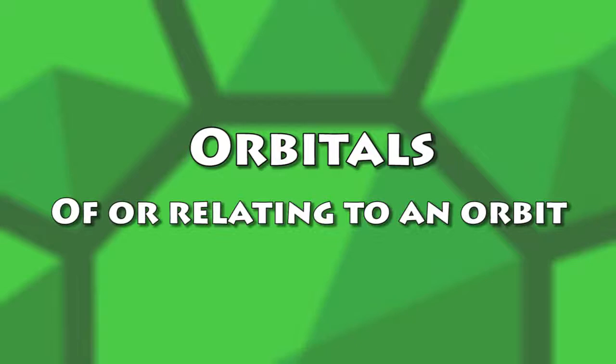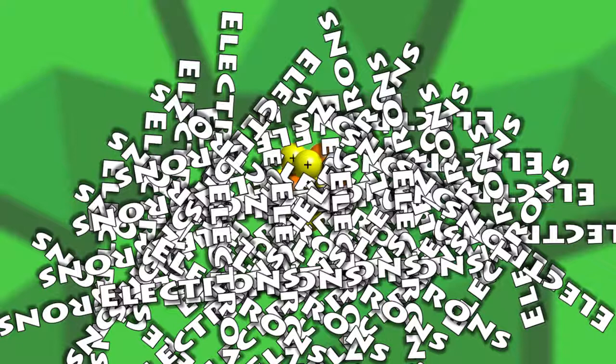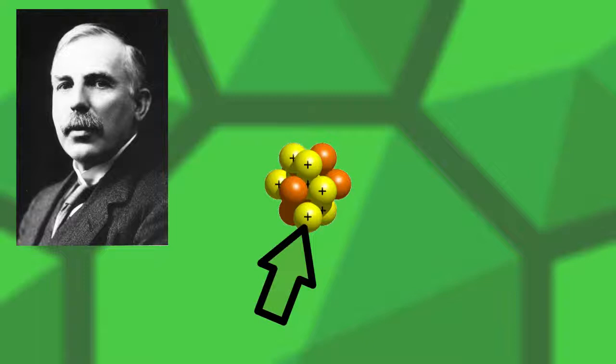Up to this point, I've been talking about the electrons, but if we focus more on the nucleus, it's comprised of protons discovered by Ernest Rutherford in 1919, and neutrons discovered by James Chadwick in 1932.